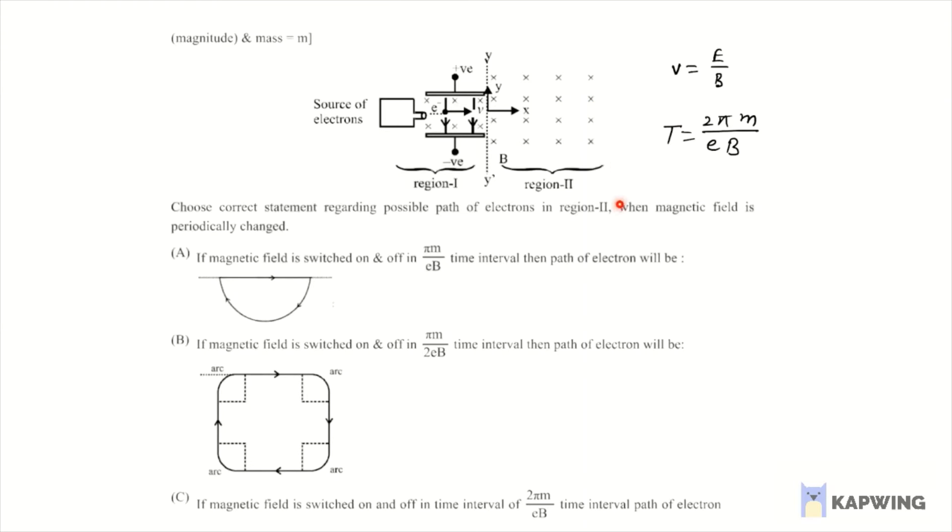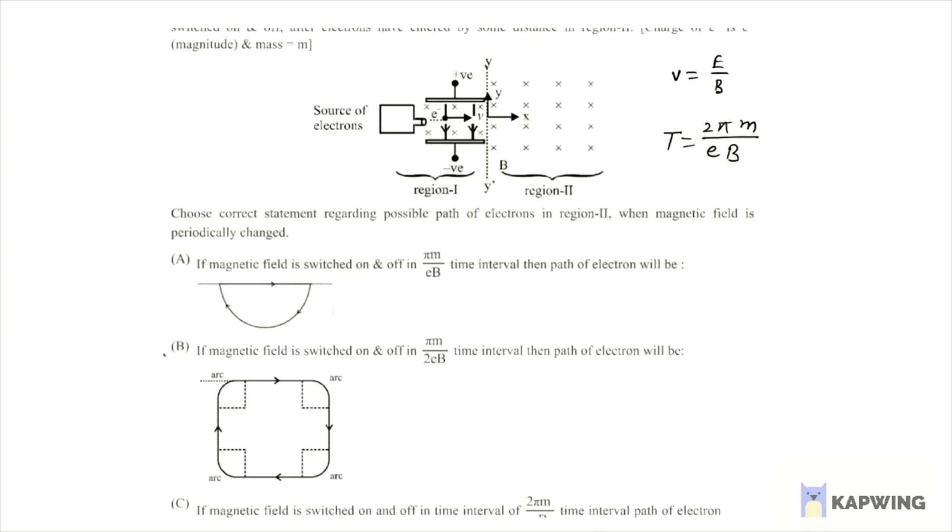So particle moving in a straight line when there is no magnetic field. Magnetic field is started, one fourth circle completes, then again straight line, then again one fourth circle completed, and again straight line, and then again. B option is correct and this is the single correct answer type of question, so B is the correct answer.